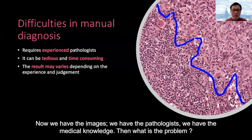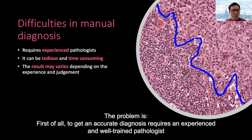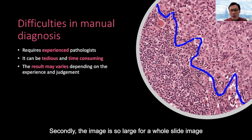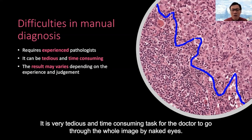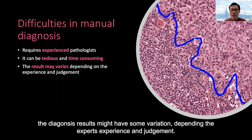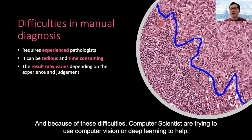Now we have all the images, we have pathologists and medical knowledge — so what's the problem? First, to get an accurate diagnosis, we require expert, well-trained pathologists, and this kind of expertise is hard to train and is a scarce resource. Second, the whole slide image is so large that it's a very tedious and time-consuming task for a doctor to examine the whole image by naked eye. Third, because the decision involves humans, for marginal cases the diagnosis may vary depending on the expert's experience and judgment. Due to all these difficulties, computer scientists are trying to use computer vision and deep learning to help.